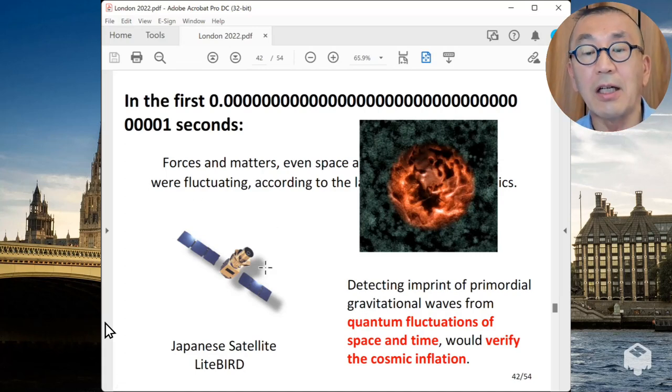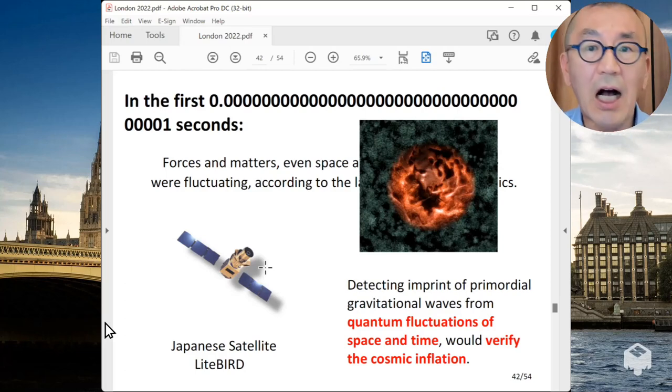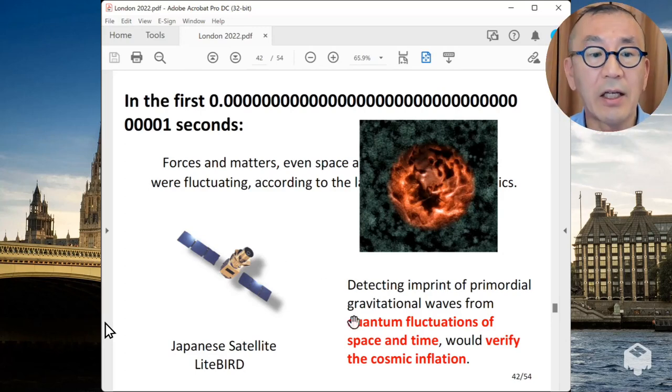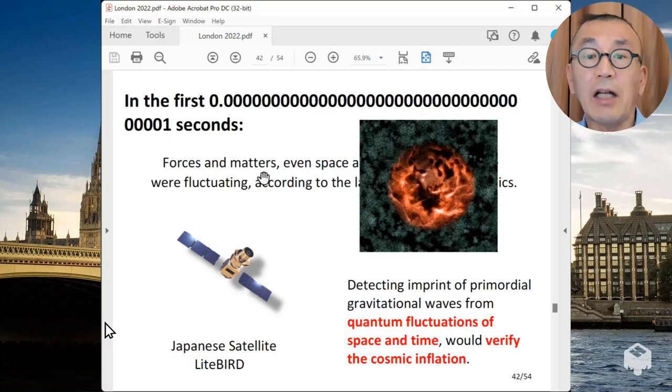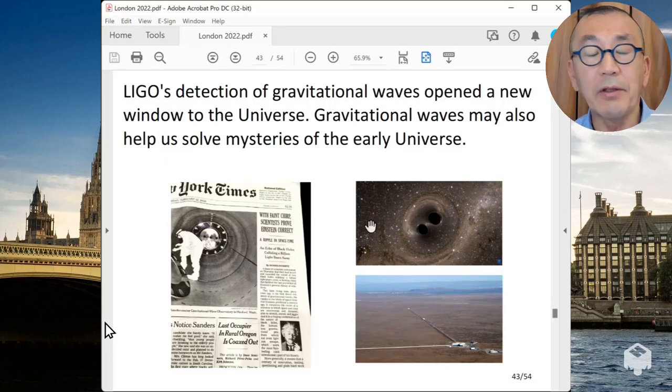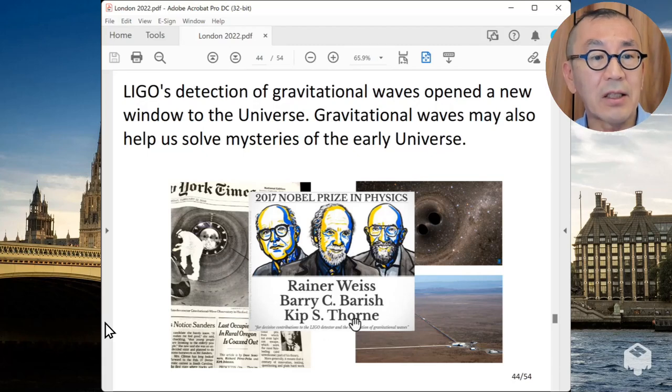For example, the Cavalry IPMU at the University of Tokyo, which I'm the director of, is planning to launch a satellite, a scientific satellite, during this decade in collaboration with JAX and KK, to get more data, much better data about the primordial light, which can shed light on and possibly verify the prediction of inflation cosmology.